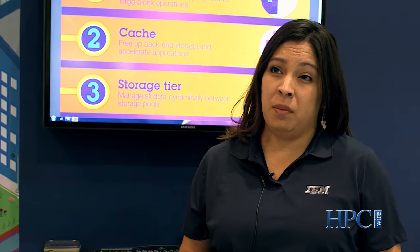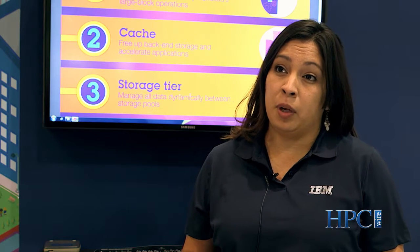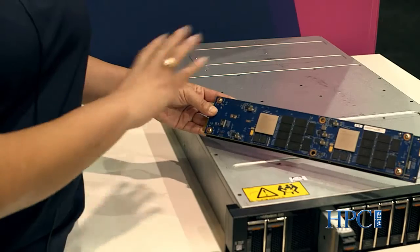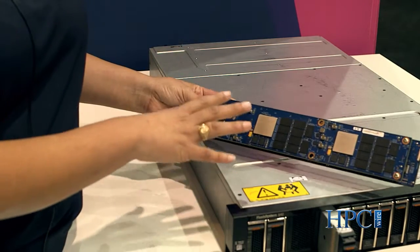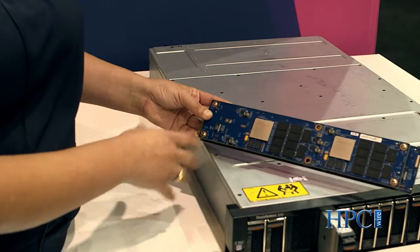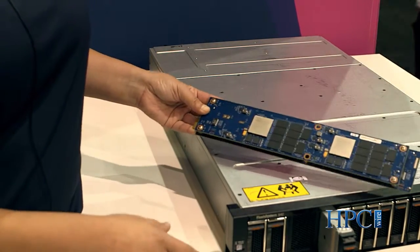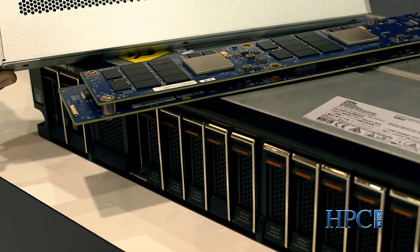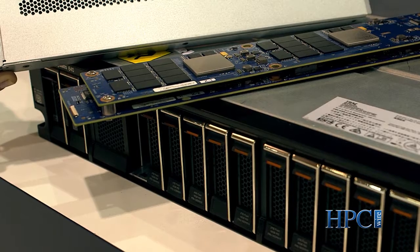The Flash System 840 has about 40 terabytes of usable capacity after RAID 5. What we're showing here today is the actual system, and we can also fit an entire petabyte of usable storage in one rack, one tile, in your data center.